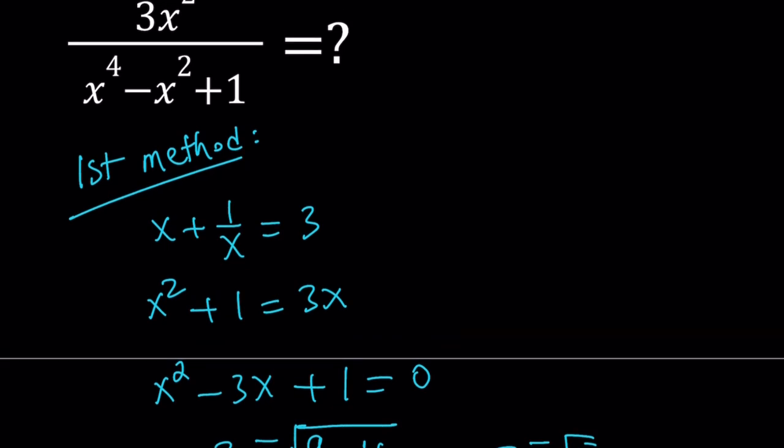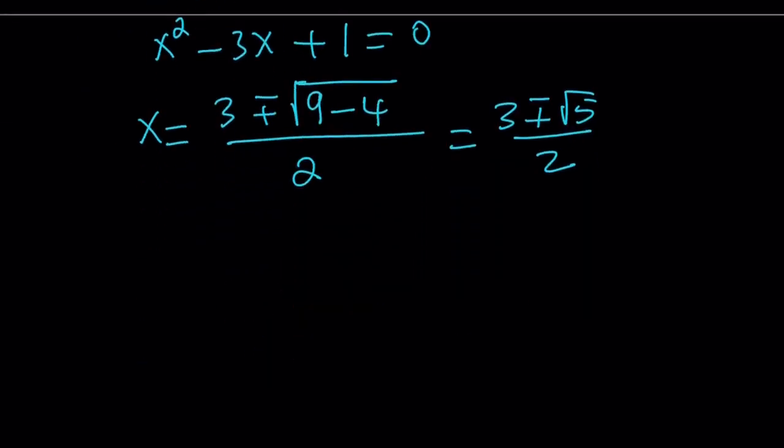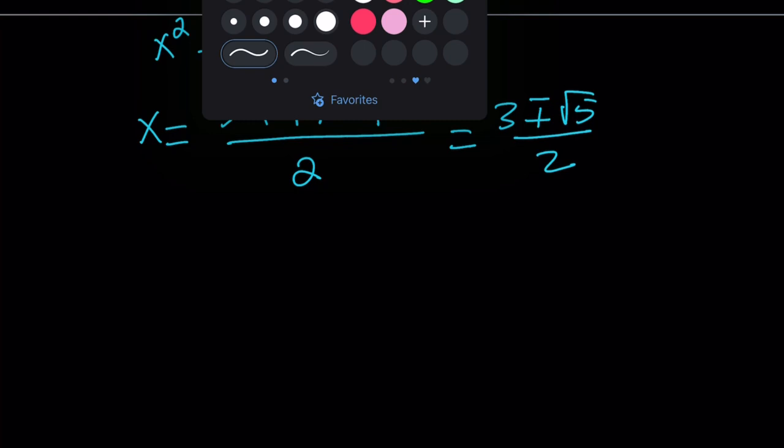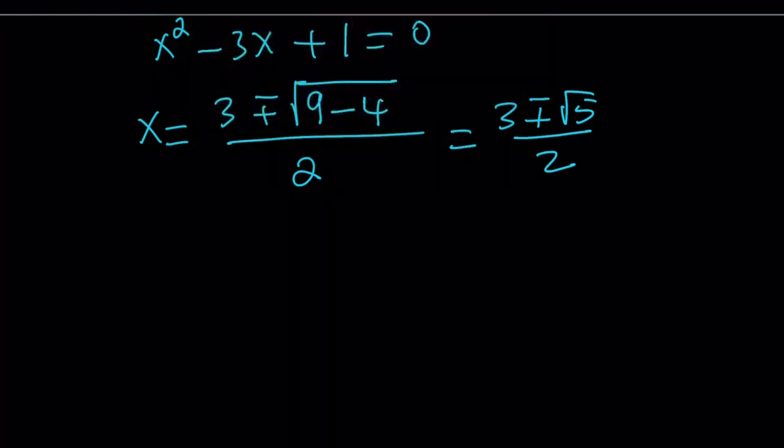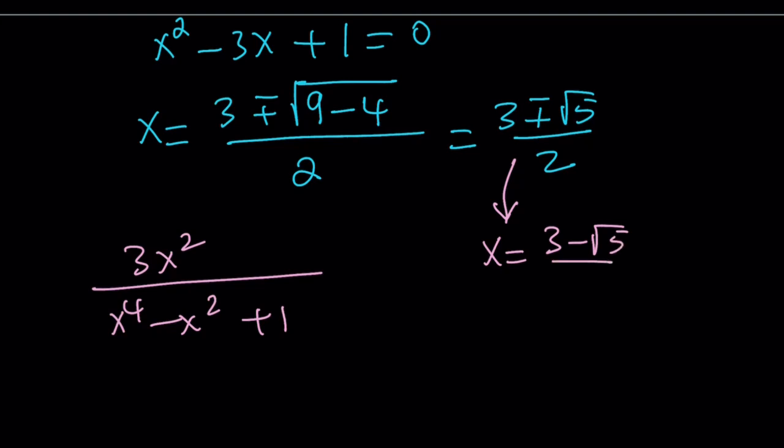We're supposed to evaluate this algebraic expression, so we can substitute the x values. We're supposed to evaluate 3x squared divided by x to the fourth power minus x squared plus 1. But which x value are we going to use? That's the million dollar question. And the answer is it shouldn't matter; otherwise we'd get two different answers for this problem. Suppose we go with the negative, x equals 3 minus root 5 over 2. This time I'm just going to pick on the negative.